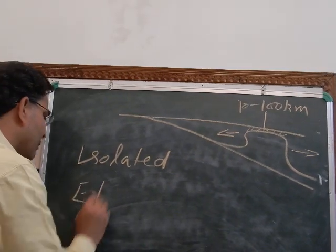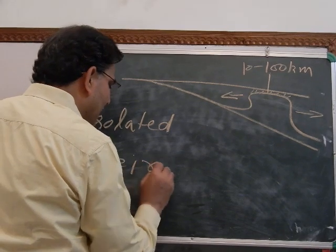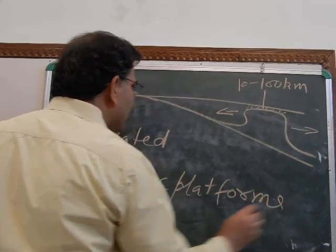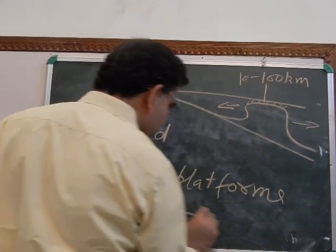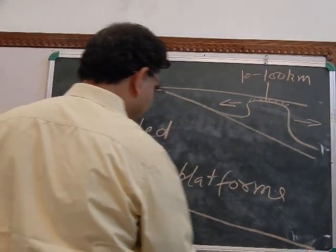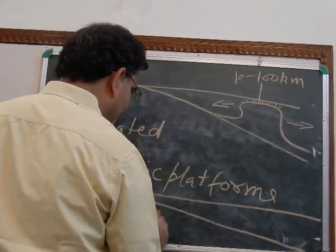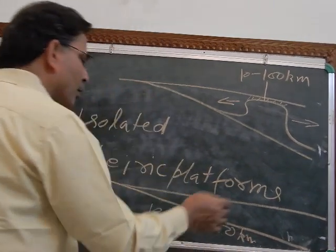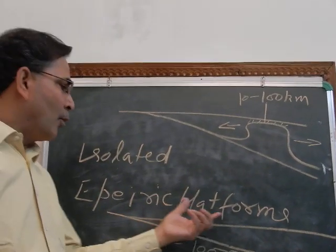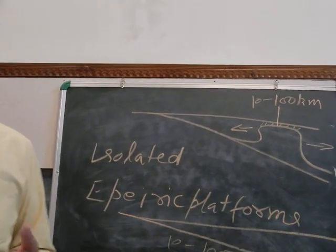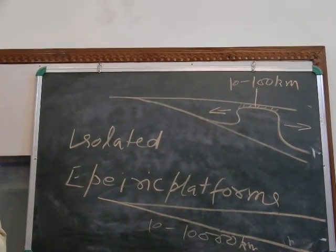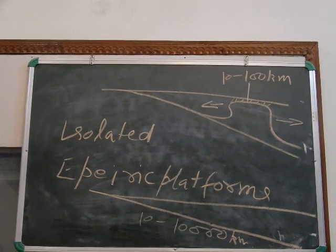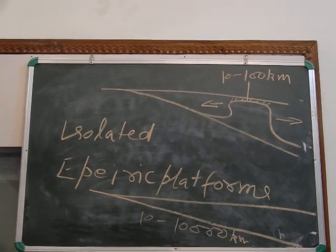The last type is the epeiric platform. Epeiric platforms are very large in size — 10 to 10,000 kilometers — broad shallow oceans where formation of carbonate takes place. So the five types of carbonate environment are: ramp, unrimmed, rimmed, isolated, and epeiric.